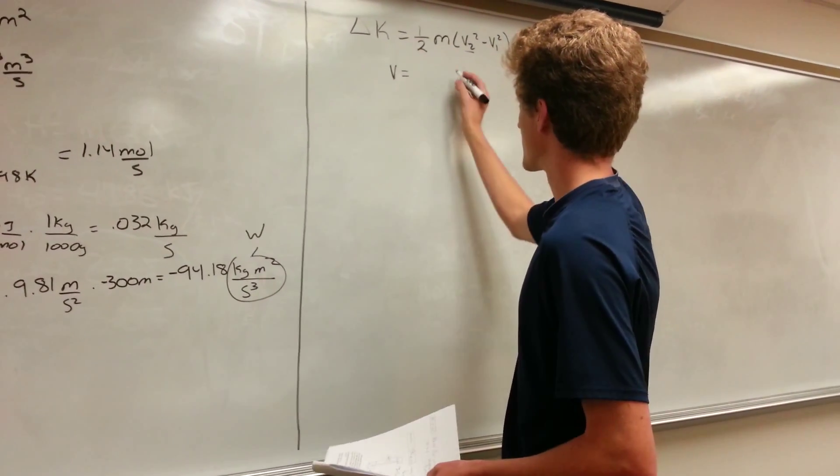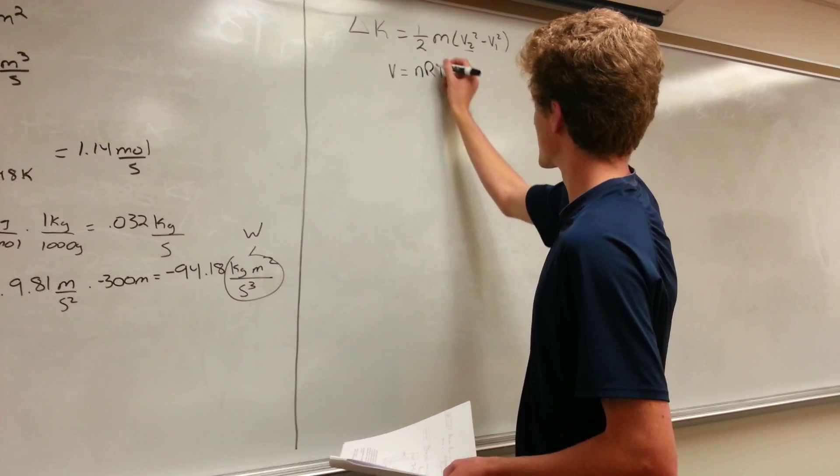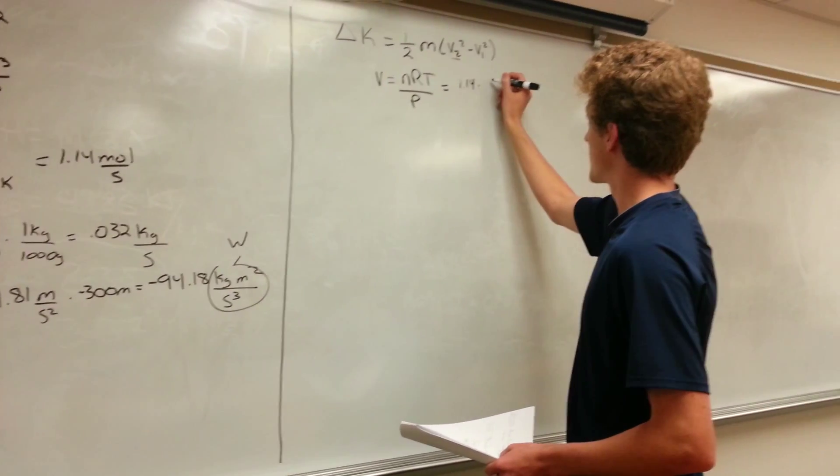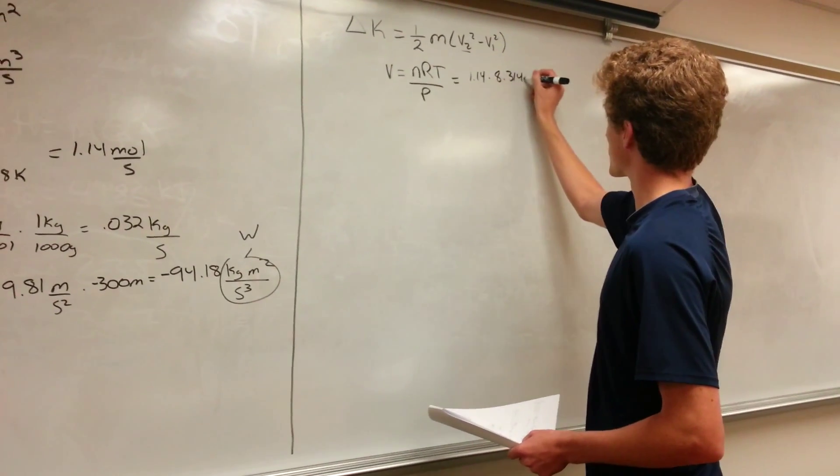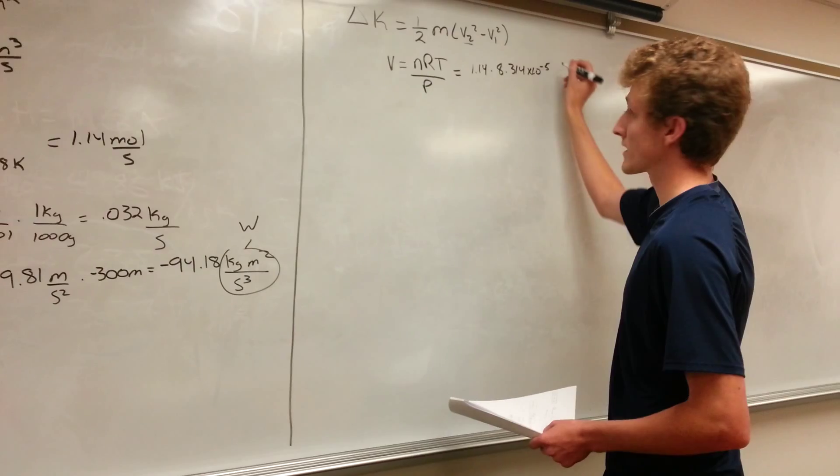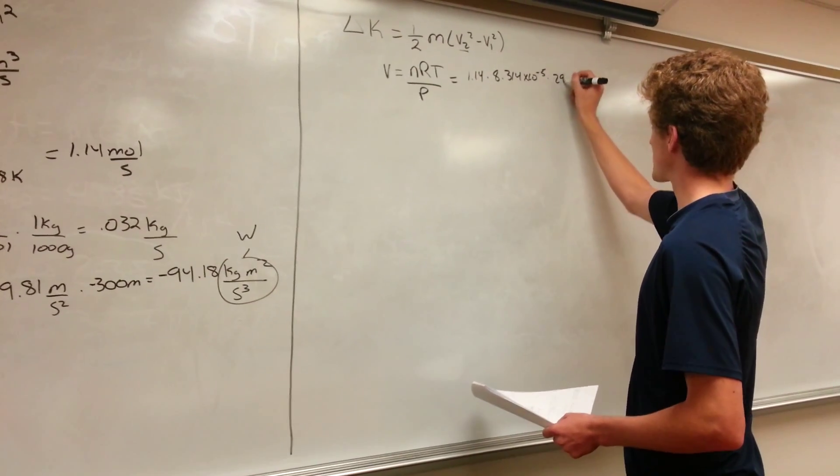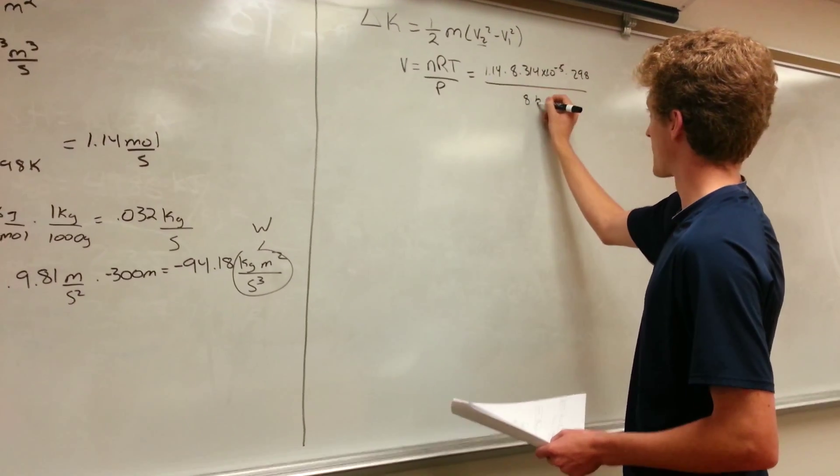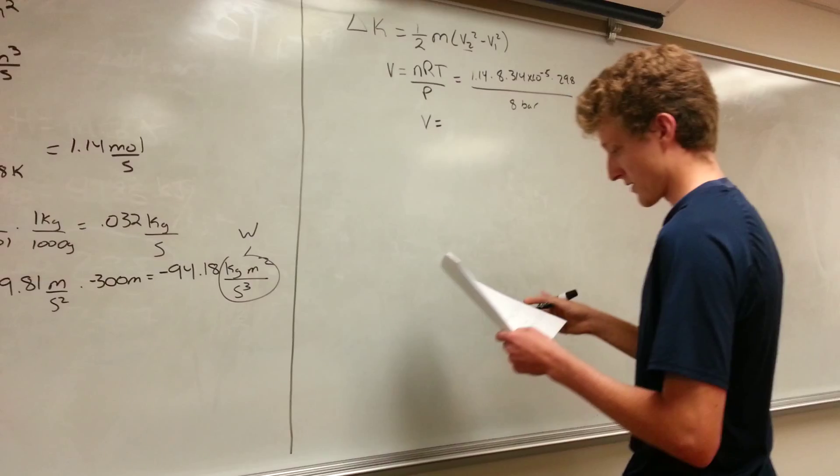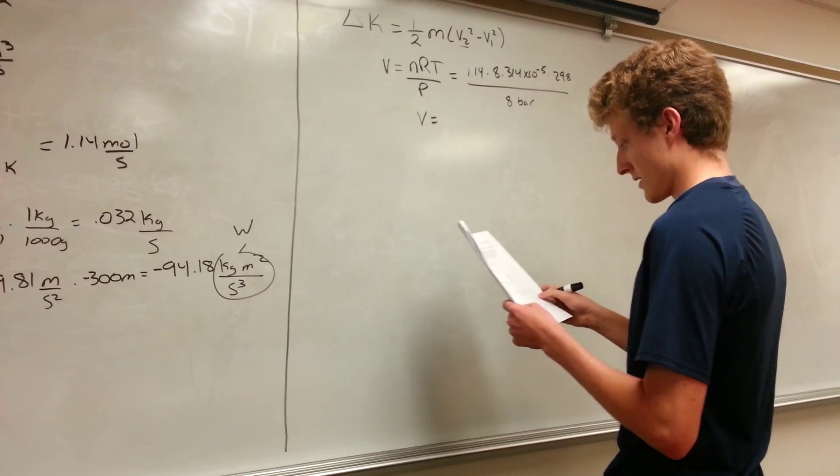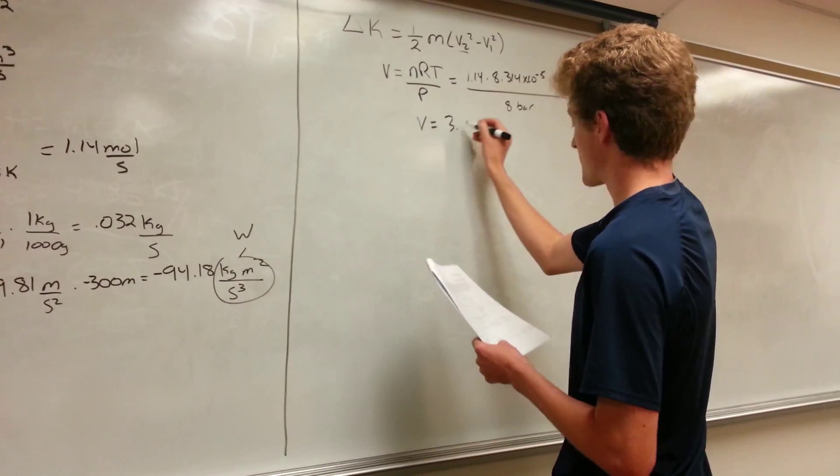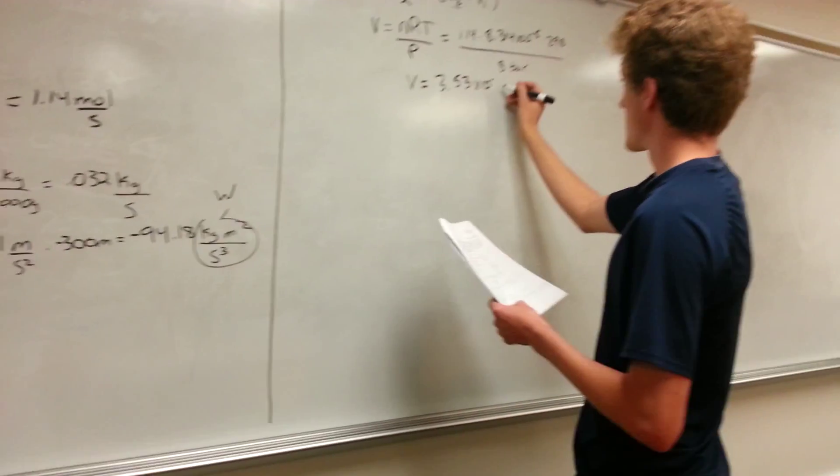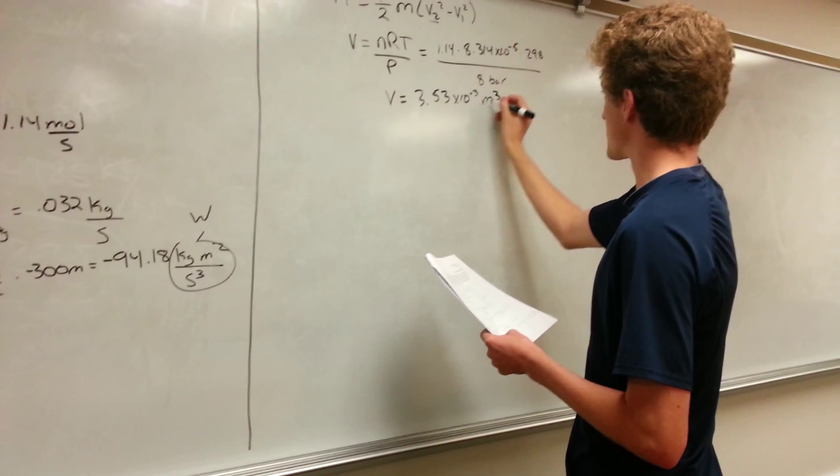So volume equals nRT over P. 1.14, 8.314 times 10 to the negative 5 times our temperature, divided by that final pressure, which we said was 8 bar. This will give us a volumetric flow rate of 3.53 times 10 to the negative 3 meters cubed per second.